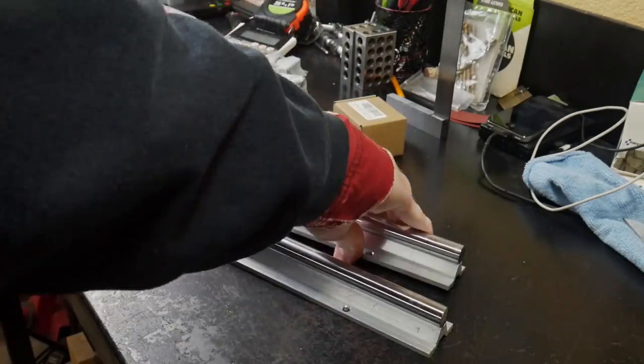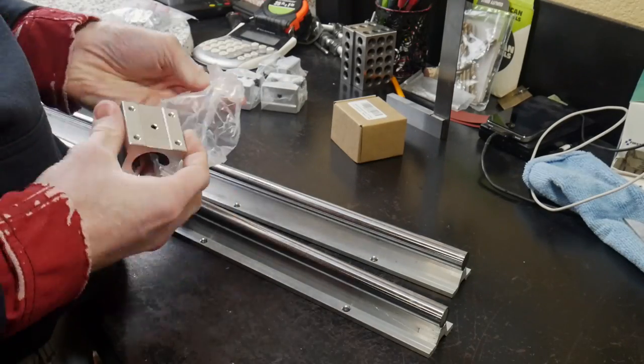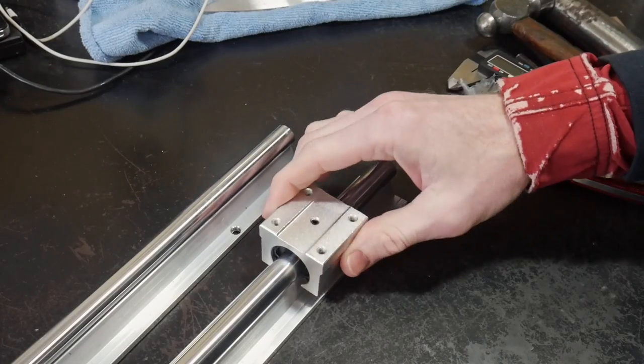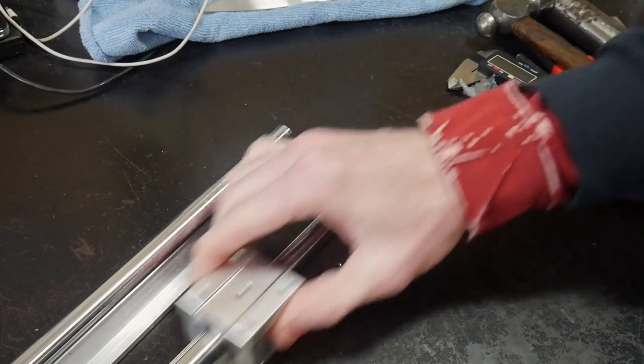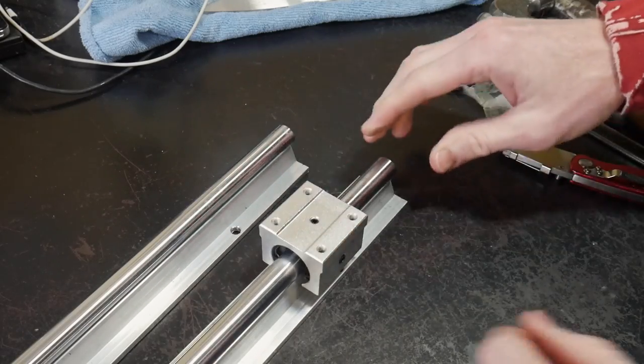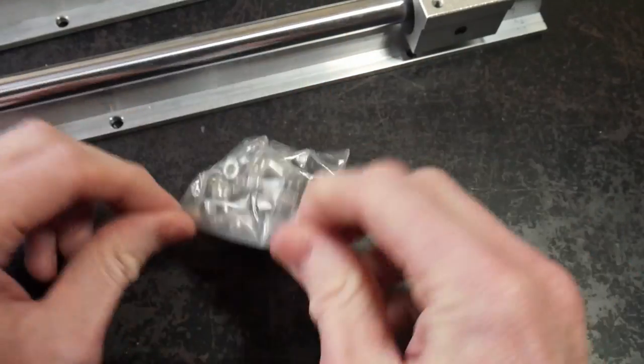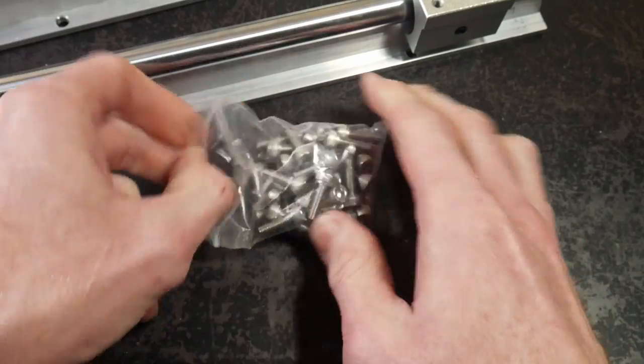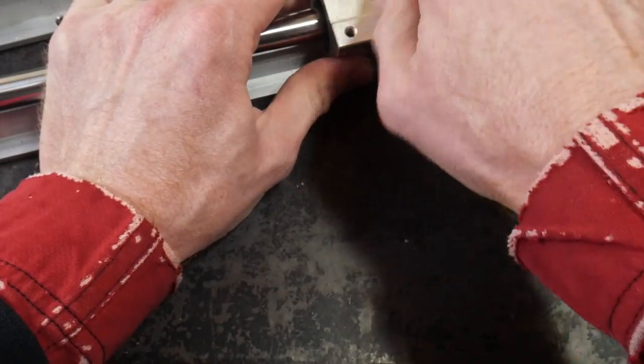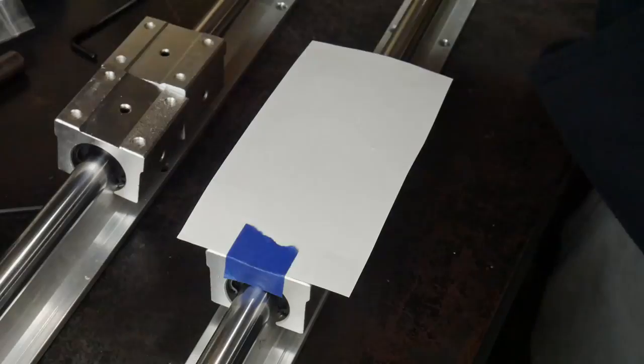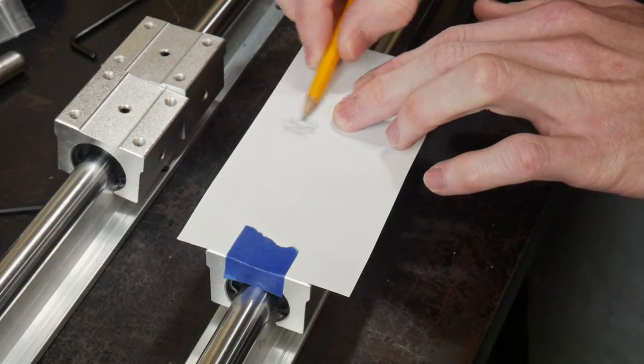That can be used to attach these hinges to and attach our frame to. Whenever you're ordering an imported item like this I like to unbox it completely and make sure I have all the pieces. In this case I did get all the pieces with my order. I also ordered 50 stainless steel M5 by 16 millimeter cap head screws so that we can attach some plates to these rails.